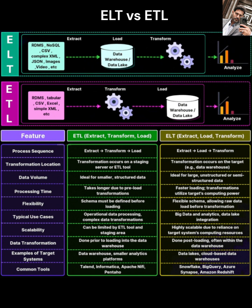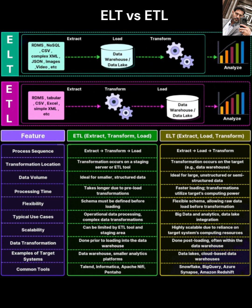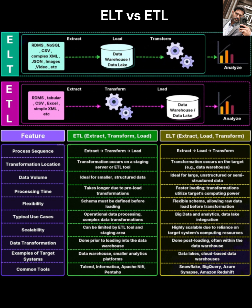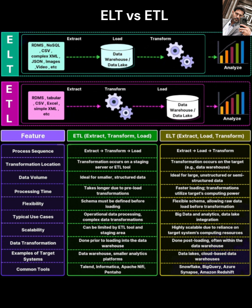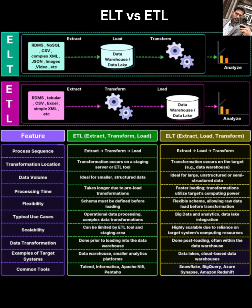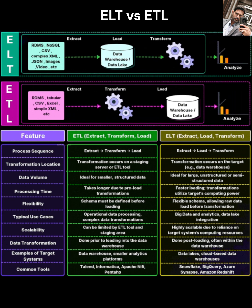For ELT, it's ideal for larger, unstructured, or semi-structured data volumes. Loading is faster because you're just moving raw data. Transformation leverages the target system's computing power, which is often highly scalable in cloud data warehouses. It offers more flexibility because you can load raw data first and decide how to transform it later, adapting to changing needs without redefining a schema upfront. Typical use cases are big data analytics, data lake integration, and working with cloud-based data warehouses like Snowflake, BigQuery, or Redshift.